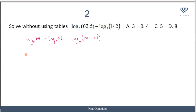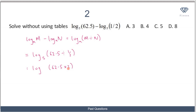Since we have a minus sign, this expression is the same as log(62.5 divided by 1/2) to base 5. Dividing by a fraction means multiplying by its reciprocal, so 62.5 divided by 1/2 becomes 62.5 times 2, which gives us 125. So we need to find log 125 to base 5.